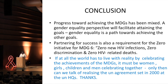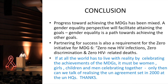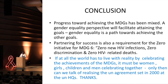Progress towards achieving the MDGs has been mixed. A gender equality perspective will facilitate attaining the goals — this is a path towards achieving other goals. Partnering for success is also a requirement for the zero initiative, which means zero new HIV infections, zero discrimination, and zero HIV-related deaths. This should be the goal of the world. If the world is to truly celebrate the achievements of the MDGs, it must be women, girls, children, and men celebrating together. Only then can we talk of realizing the UN agreement set in 2000. Short of that, if only a few people are celebrating, the MDGs will have become a failure.